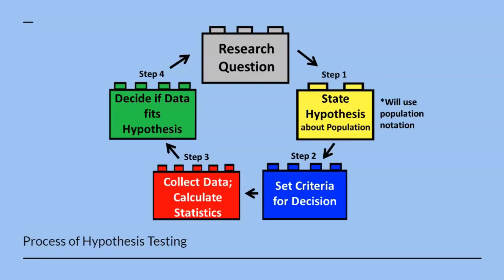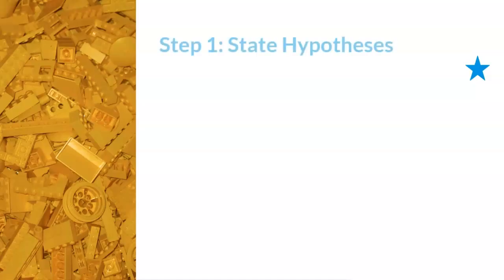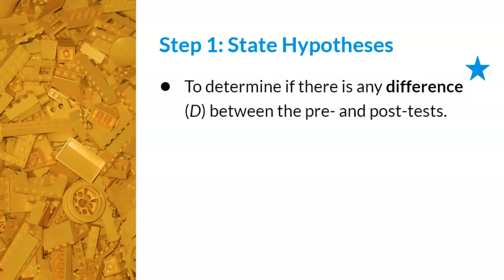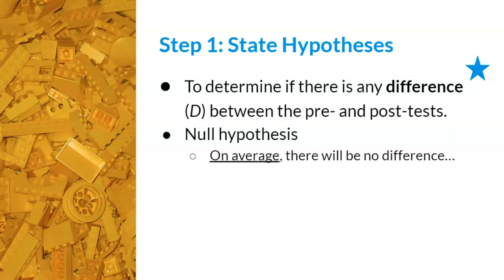You've seen this diagram multiple times by now. This diagram illustrates the process of hypothesis testing. We will use the same four steps in conducting a t-test for dependent means, with some modifications along the way. Step one is to state hypotheses. The word of the day for this test is 'difference.' Since the sample is being tested twice, the researcher needs to determine if there's any difference between the pre-test and the post-test scores. The researcher then calculates the mean of the difference scores, so the written statement for hypotheses must include the wording 'on average.'